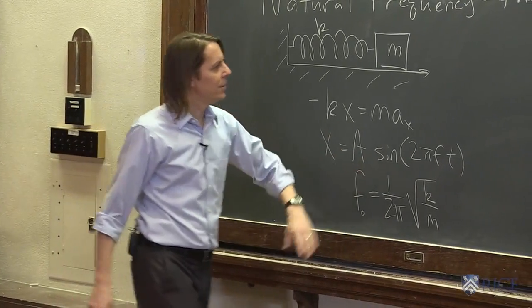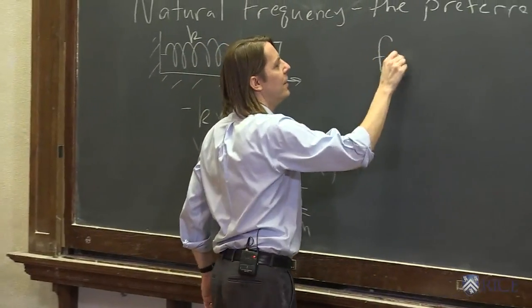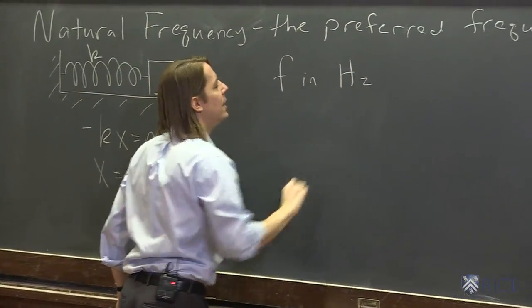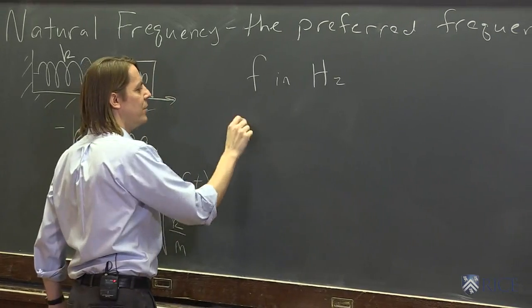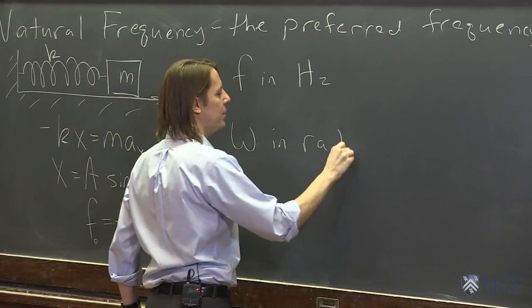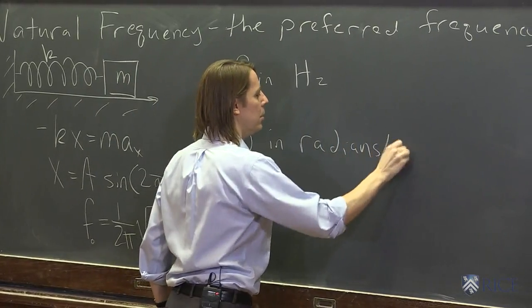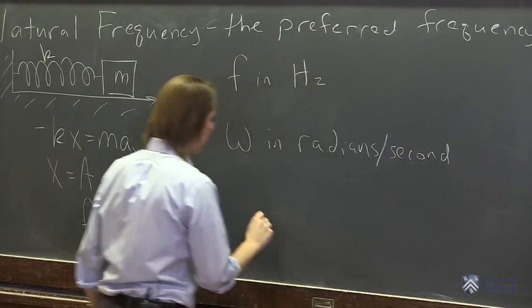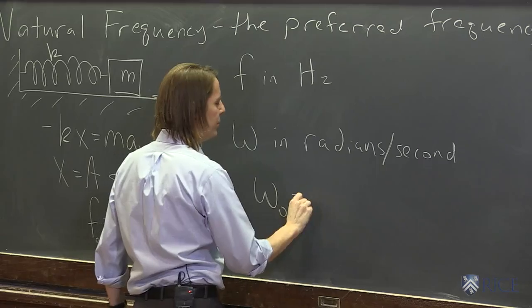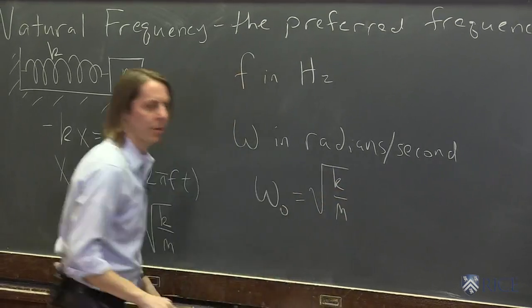You might see this also written as omega. So f is in hertz. If you want to work in radians per second, then you call it omega in radians per second. Then you have omega naught, the angular frequency, easier to remember, the square root of k over m.